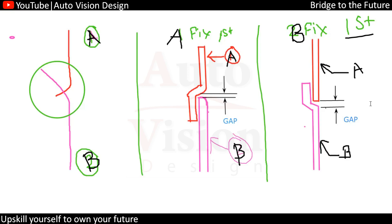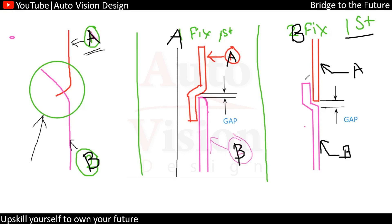Depending upon the assembly sequence, there will be a change in gap. The interface we are calling will be different depending on the sequence. We received the Class A surface and Class B surface, and now we need to develop the interface with respect to gap and flush. Depending upon the assembly sequence, the interface is created — Part A fitting first to the vehicle.